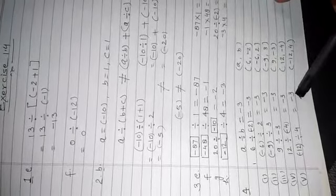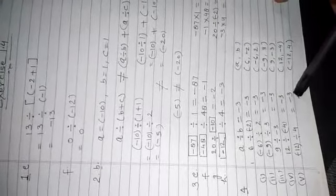Question number 5: The temperature at 12 noon was 10 degrees Celsius above zero. If it decreases at the rate of 2 degrees Celsius per hour until midnight, at what time would the temperature be 8 degrees Celsius below zero? What would be the temperature at midnight?